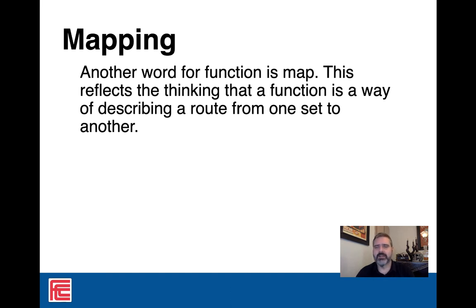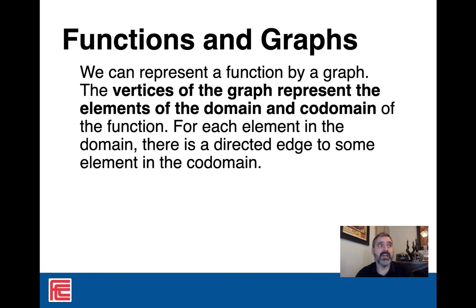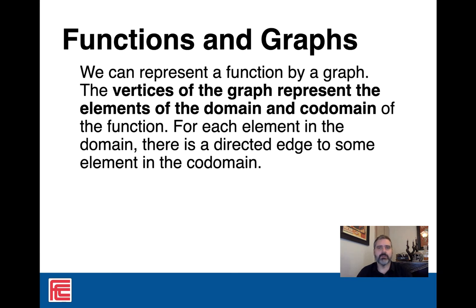The idea of mapping makes sense — I'm mapping specific values in the domain to specific values in the codomain. This means I can convert a function into a graph using graph theory. Every vertex of the graph would represent elements of the domain and codomain, and I create a directed graph with a directed edge for each element in the domain pointing to some element in the codomain.